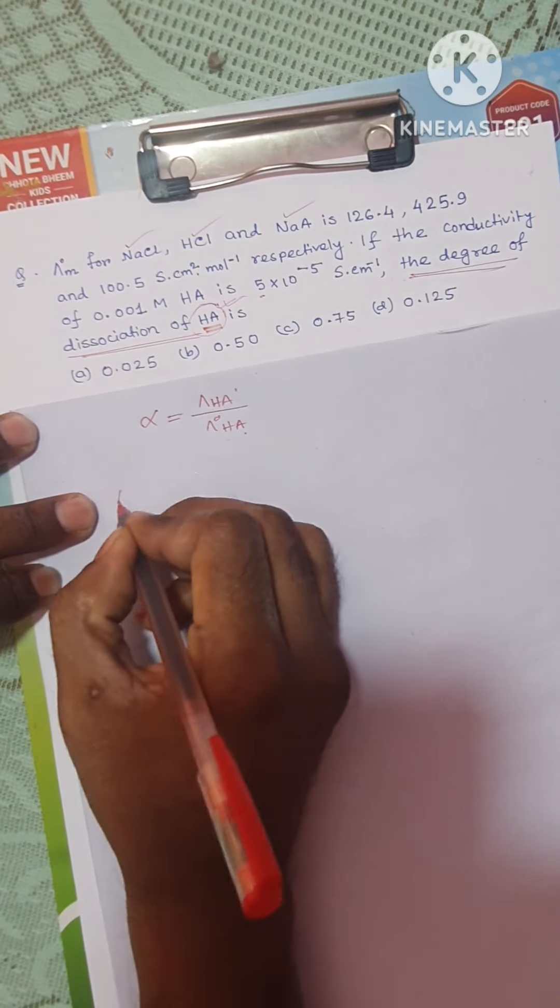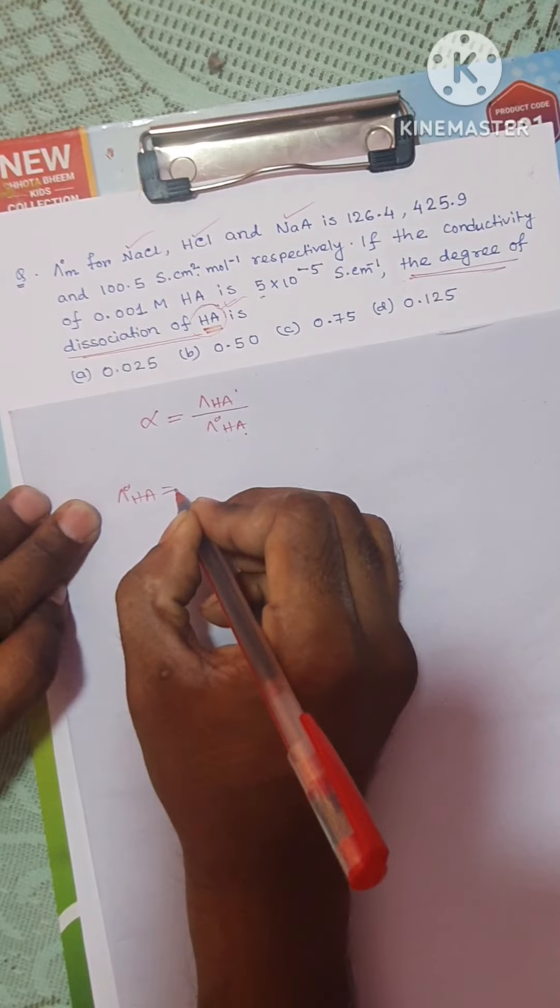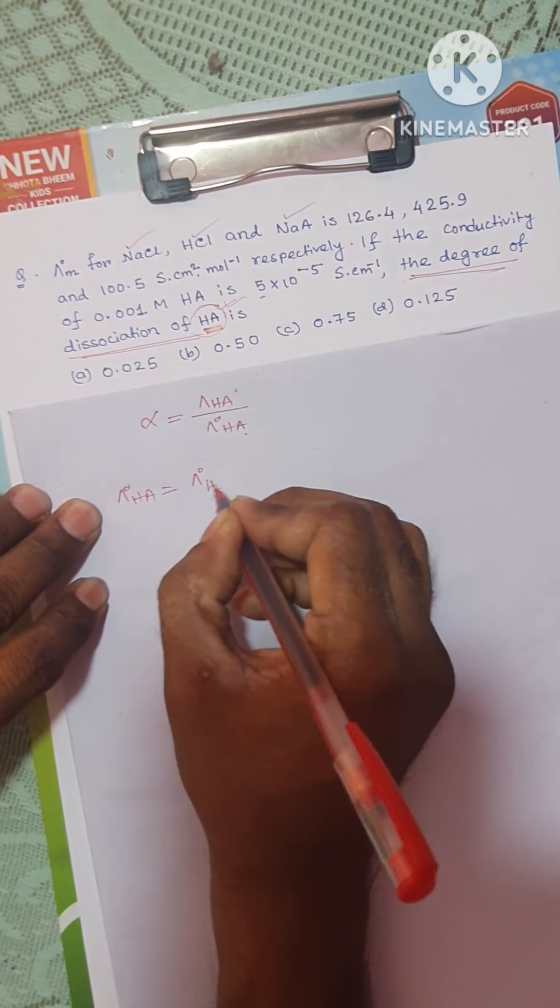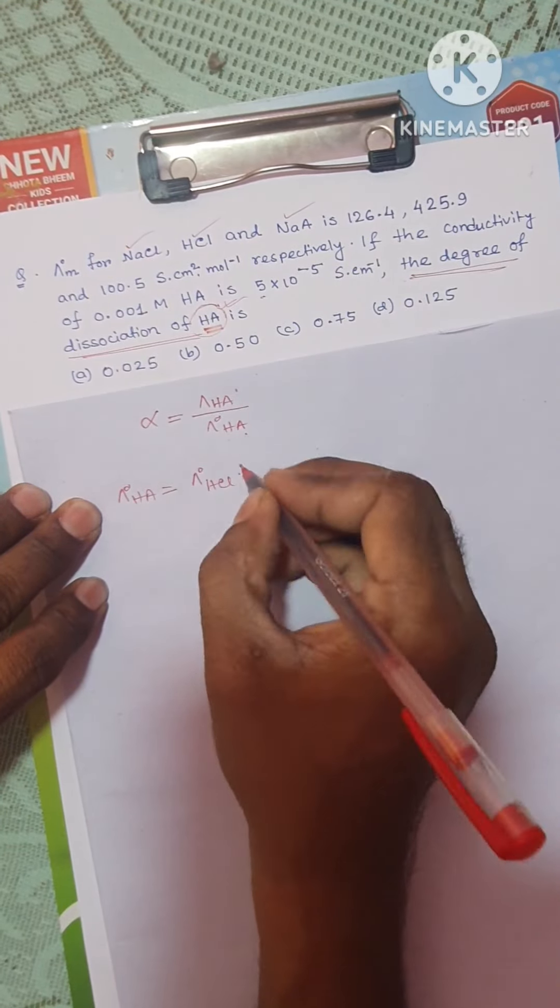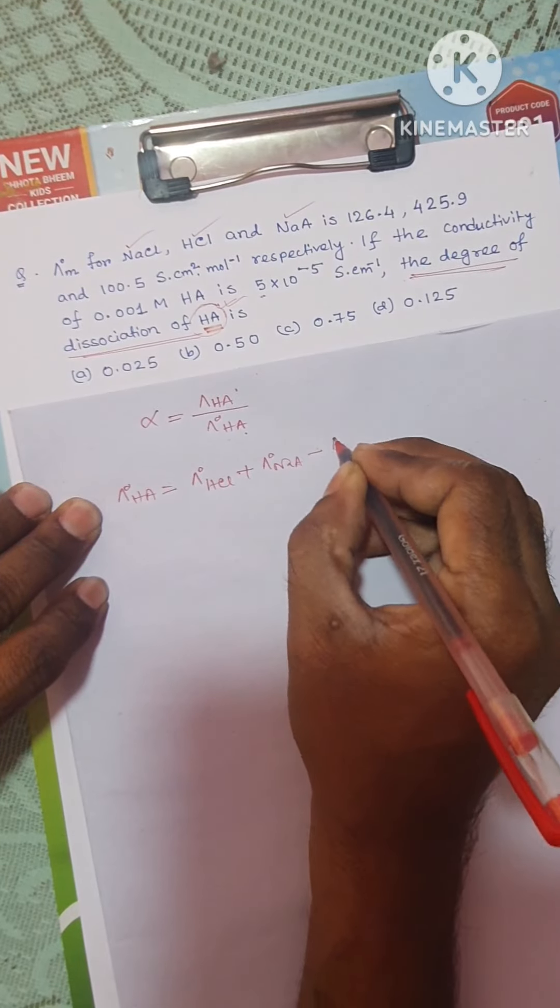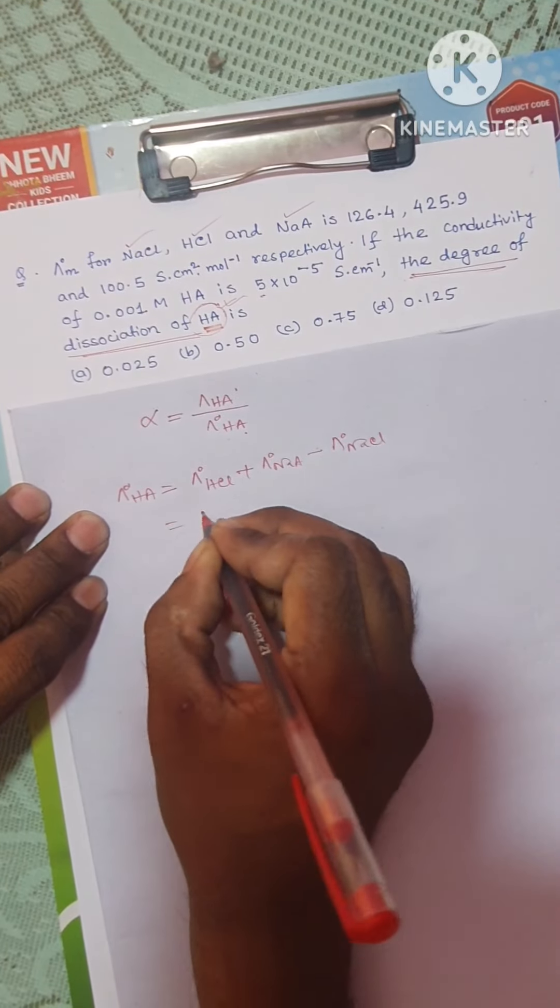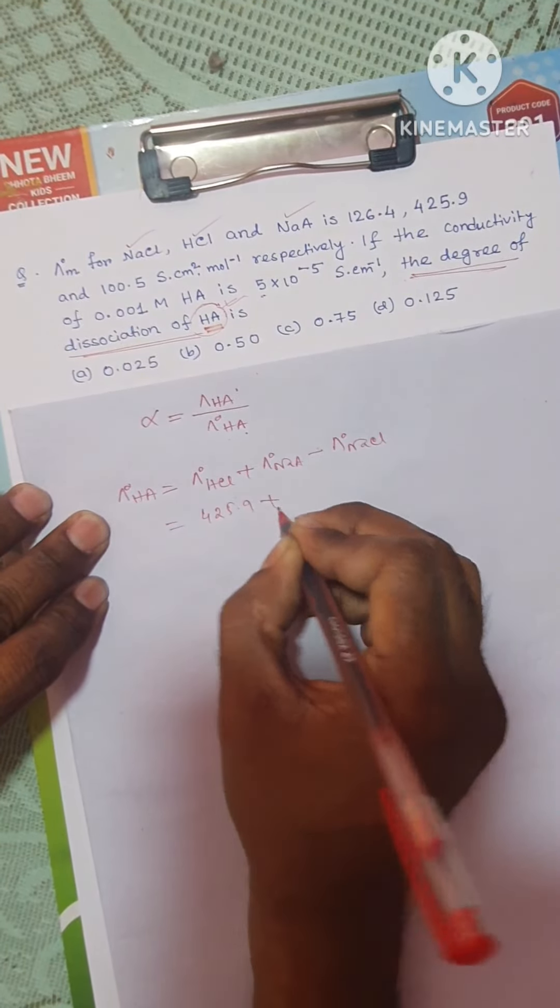To calculate lambda zero HA, there is another formula that you use. Lambda zero HCl for strong electrolytes: lambda zero equals lambda zero H plus plus lambda zero A minus.